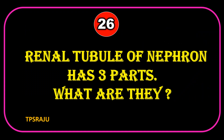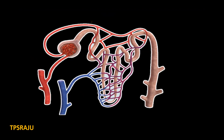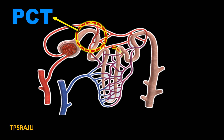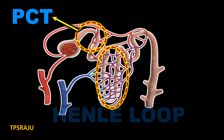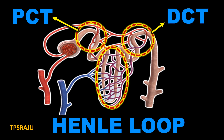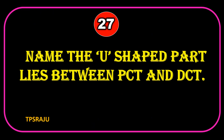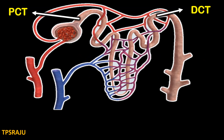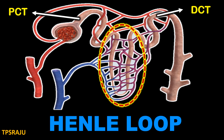The renal tubule of nephron has three parts. What are they? PCT, Henle's Loop, and DCT. Name the U-shaped part that lies between PCT and DCT. Henle's Loop.